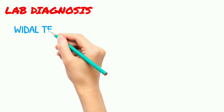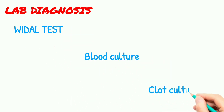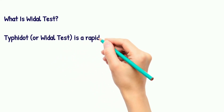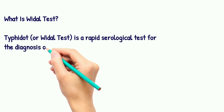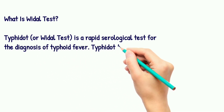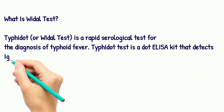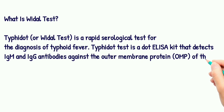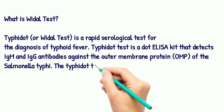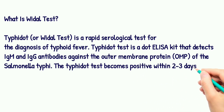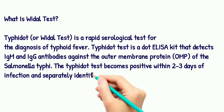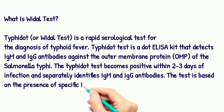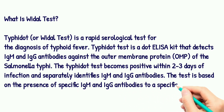Let's see the lab diagnosis for Salmonella typhi: Widal test, blood culture, and clot culture. The Widal test, also called Typhi Dot, is a rapid serological test for the diagnosis of typhoid fever. It is a dot ELISA kit that detects IgM and IgG antibodies against the outer membrane protein (OMP) of Salmonella typhi. The test becomes positive within 2-3 days of infection and separately identifies IgM and IgG antibodies, based on the presence of specific antibodies to the 50 kDa OMP.